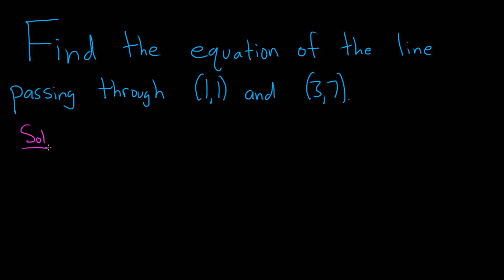So the very first step in this problem is going to be to find the slope of the line. To find the slope of the line, we use a formula. In the numerator, you subtract the y's, so y2 minus y1. And in the denominator, you subtract the x's, so x2 minus x1.